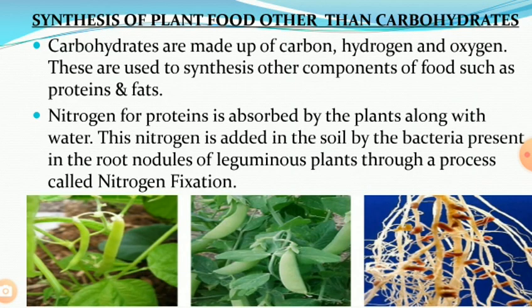Now, synthesis of plant food other than carbohydrates: carbohydrates are made up of three elements — carbon, hydrogen, and oxygen. Proteins and fats require nitrogen along with carbon, hydrogen, and oxygen. The nitrogen for proteins is absorbed by the plants with water. This nitrogen is added to the soil by bacteria present in the root nodules of leguminous plants, such as pulses, through a process of nitrogen fixation.